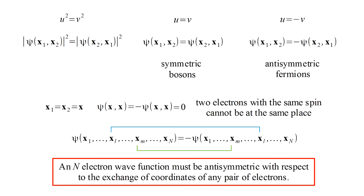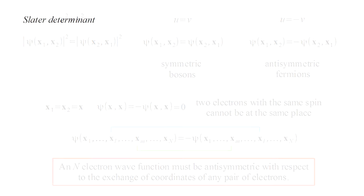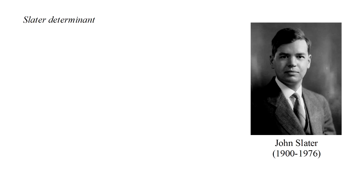In general, an n-electron wave function must be anti-symmetric with respect to the exchange of coordinates of any pair of electrons. This is a rigorous statement of the exclusion principle, and it forms an additional postulate of quantum mechanics. But how do we enforce this condition? An elegant solution is given by the Slater determinant, due to John Slater.